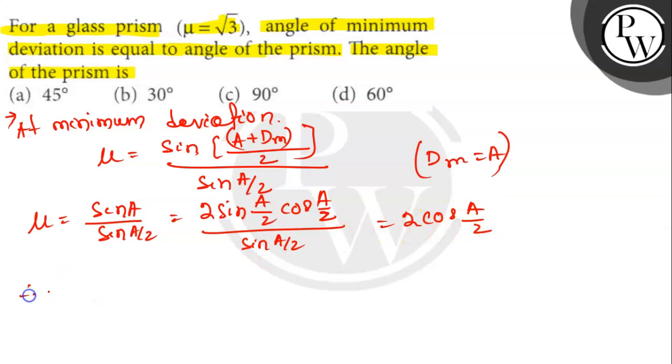This gives us cos A by 2 equals root 3 by 2, or we can write A by 2 is 30 degrees.